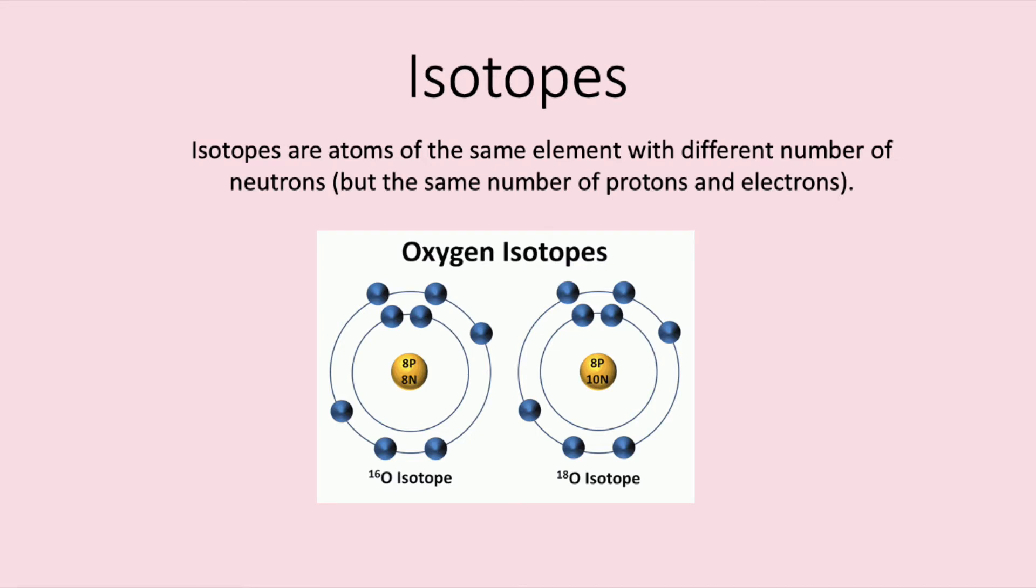However, while every atom of carbon must contain the same number of protons, 6, it can contain different number of neutrons. Isotopes are atoms of the same element with different number of neutrons but the same number of protons and electrons. As isotopes have the same number of electrons, they will still react the same way.